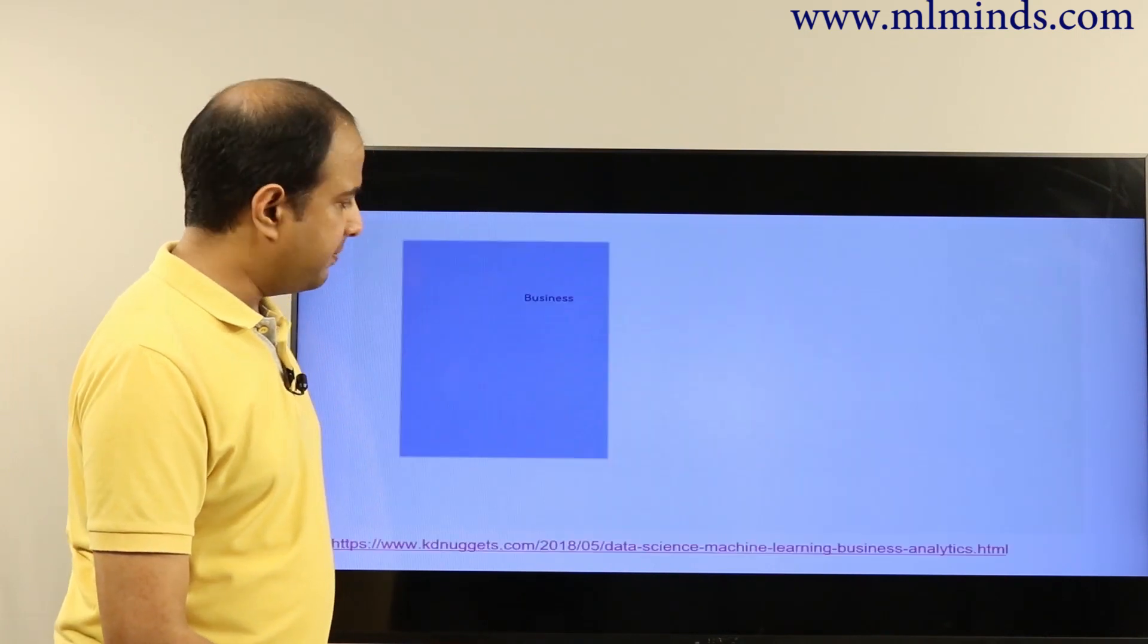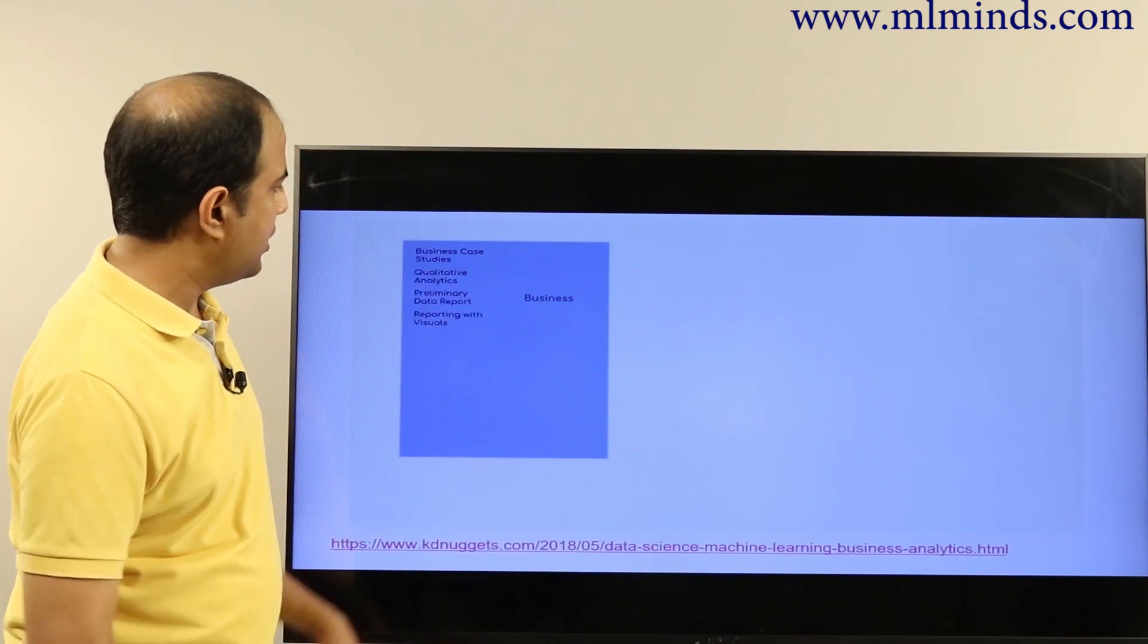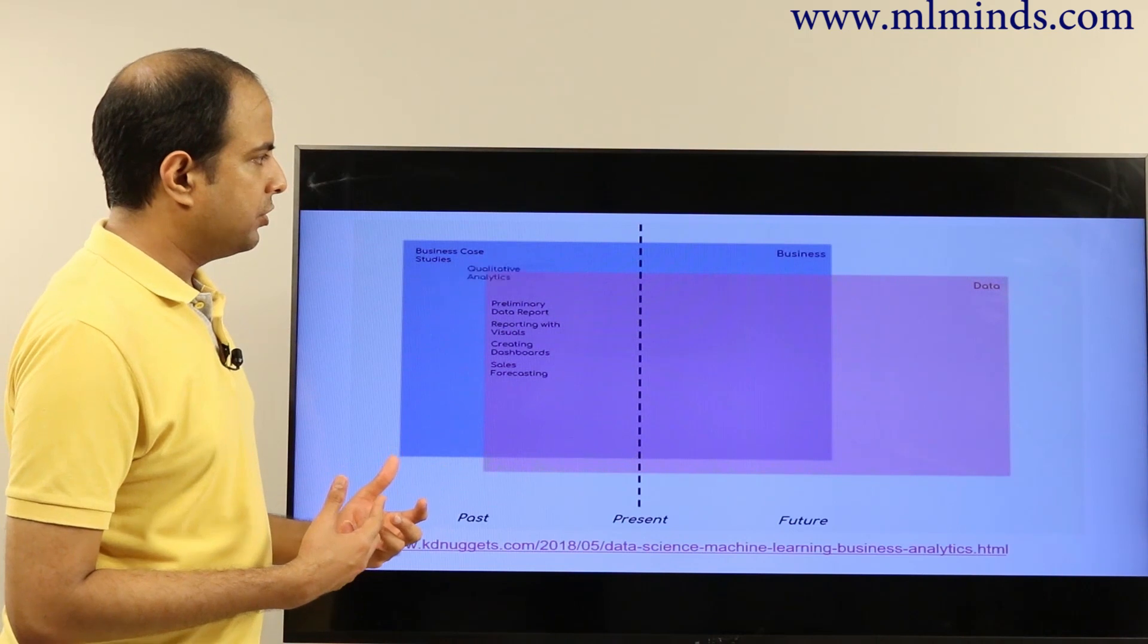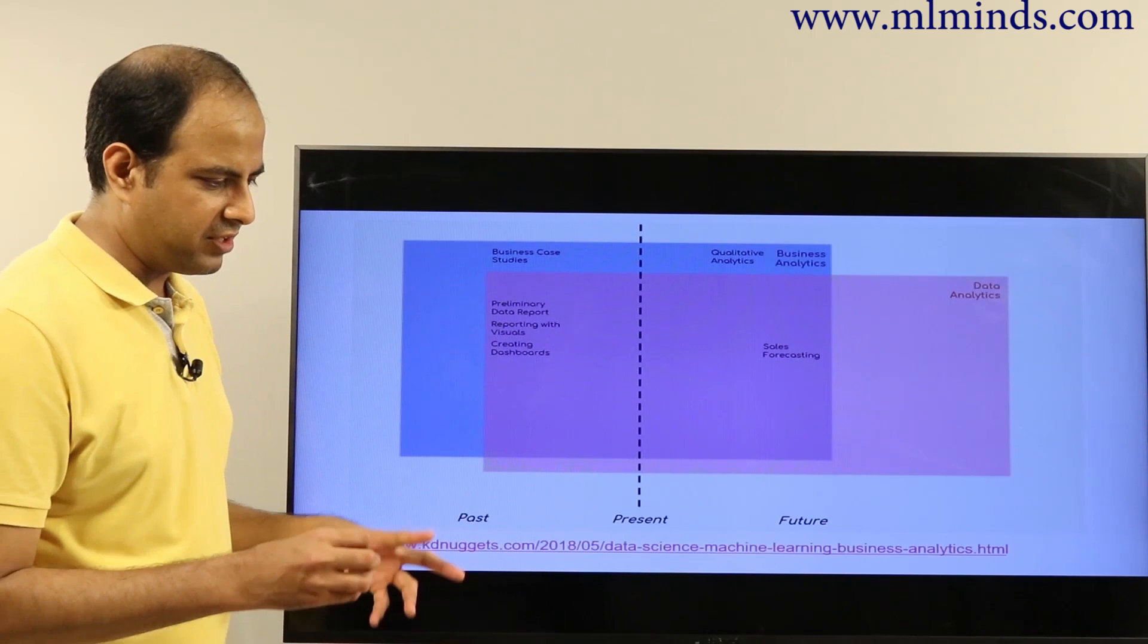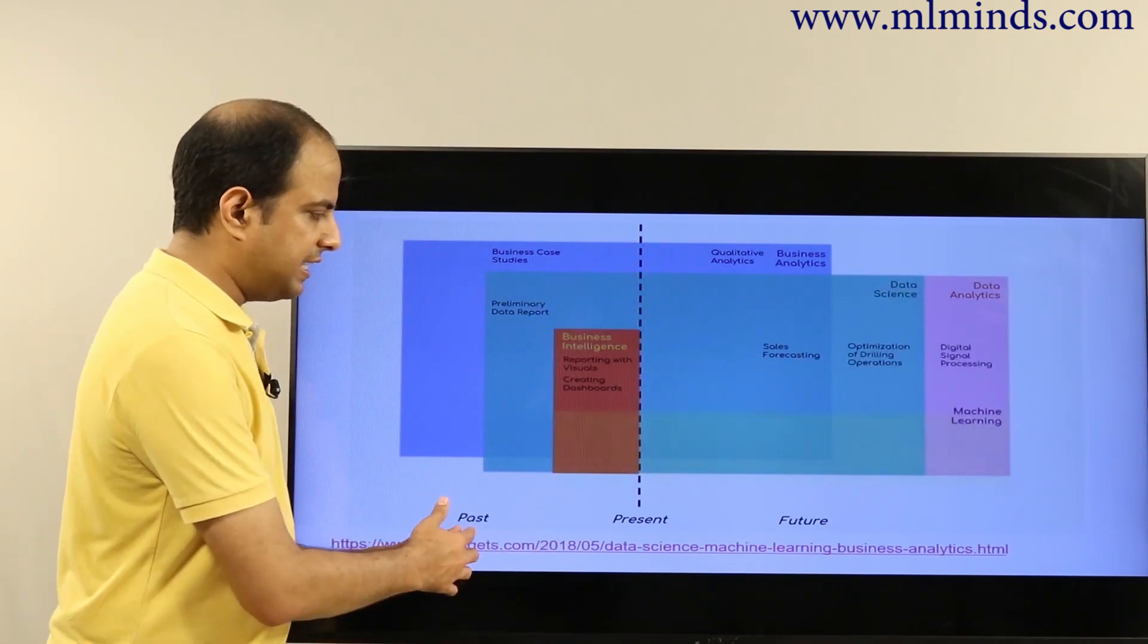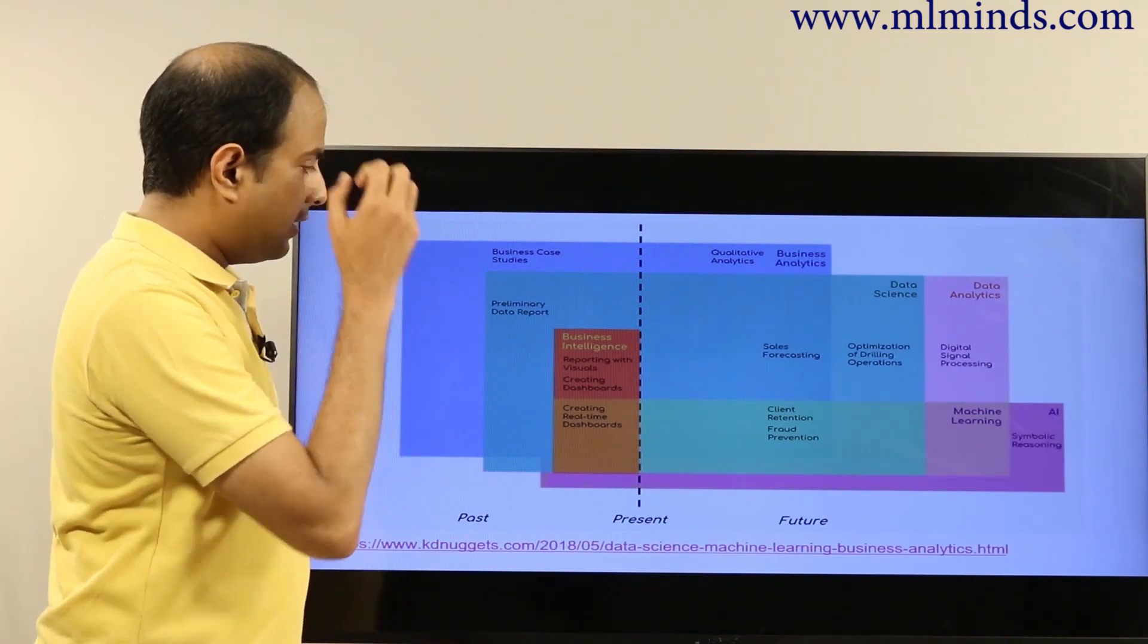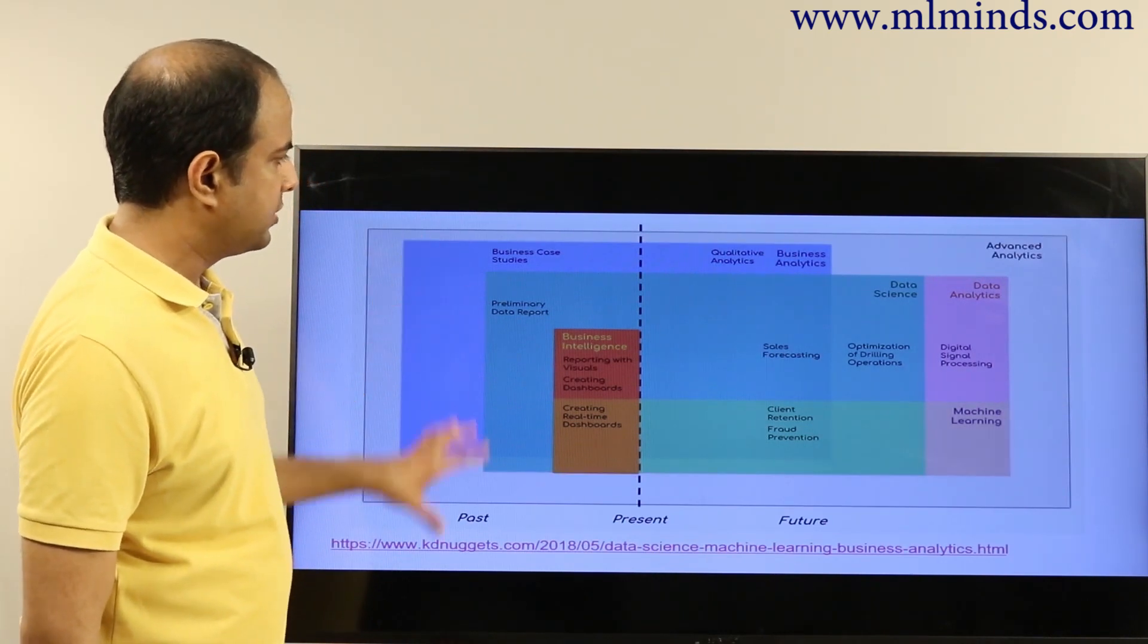This animation shows you how the different fields have progressed over time, and what I would call data analytics, business analytics. There are many of these terms which are sort of confusing. Which of these act on the current data, past data, or are useful for future predictions?